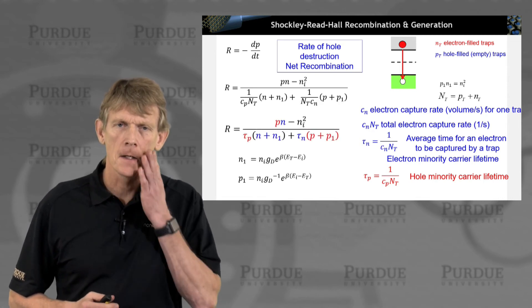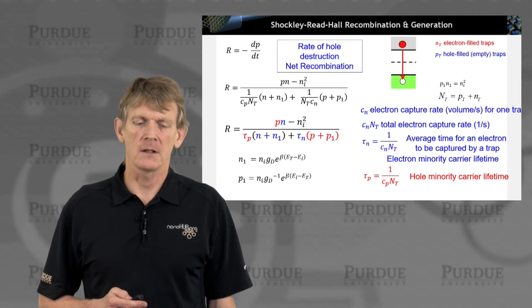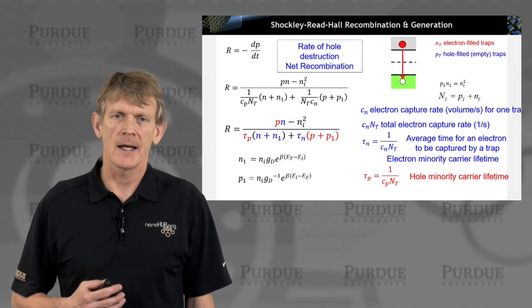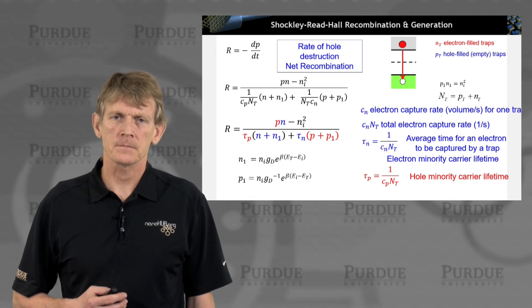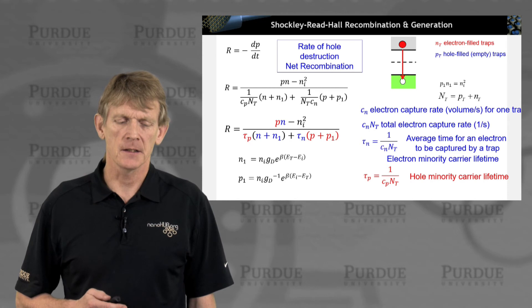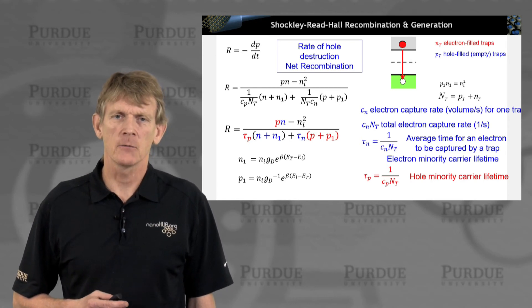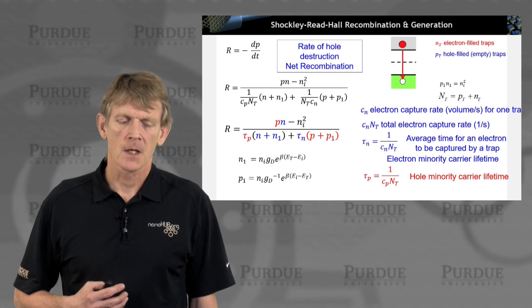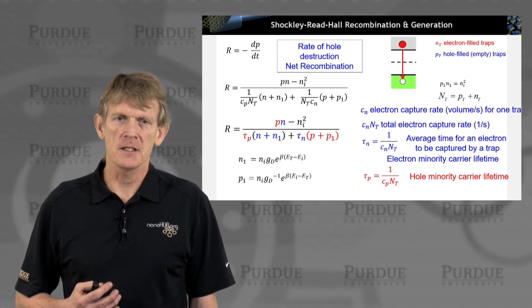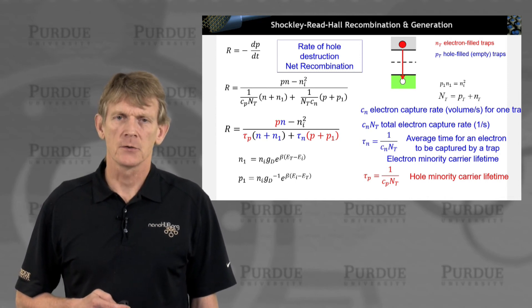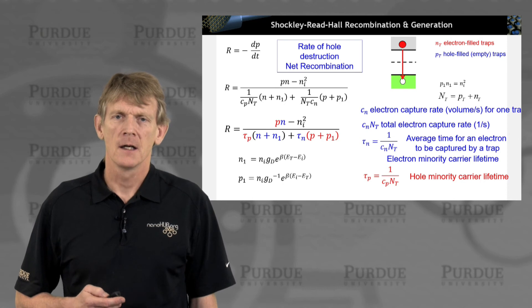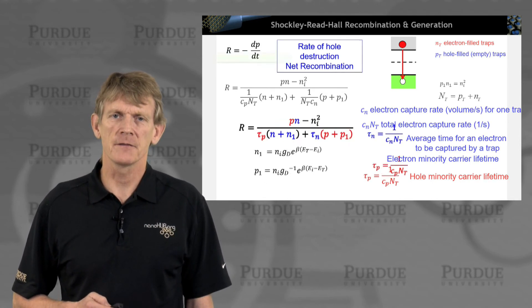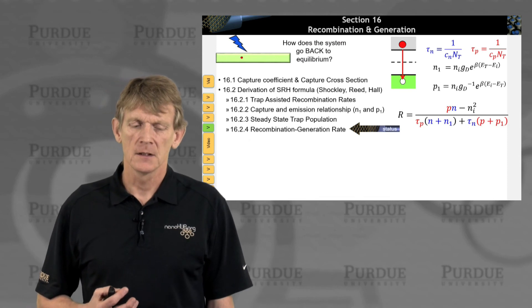And tau N and tau P will show up in expressions that are somewhat meaningful. So we use these here in the final recombination rate, the Shockley-Reed-Hall expression. So now what you have here is an expression that depends on N and P, number of electrons, number of holes in the system. Ni squared, which is something we can calculate. N1 and P1, which is something we can calculate. N1 and P1 are just equilibrium numbers of occupation of traps. The Gs are the degeneracies of these traps. So these are calculable things. Tp and Tn are somewhat material properties now for a specific material. This is the Shockley-Reed-Hall expression.